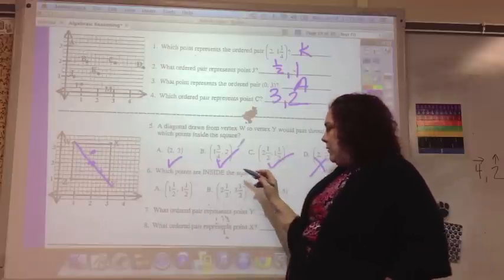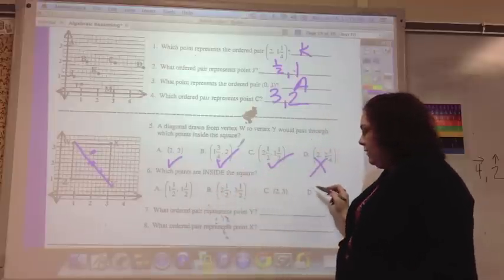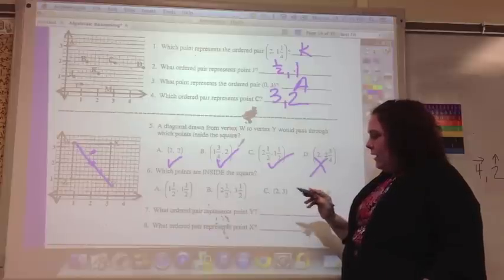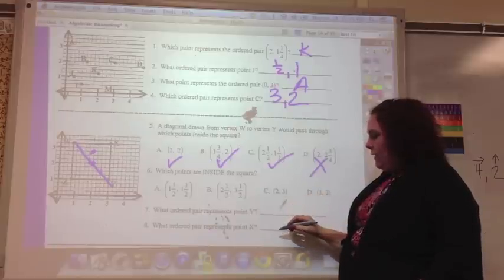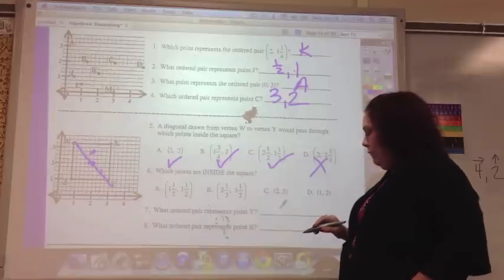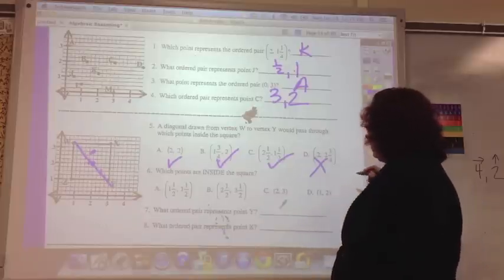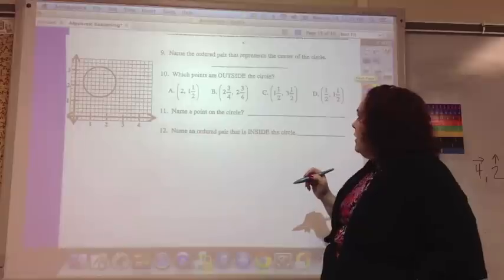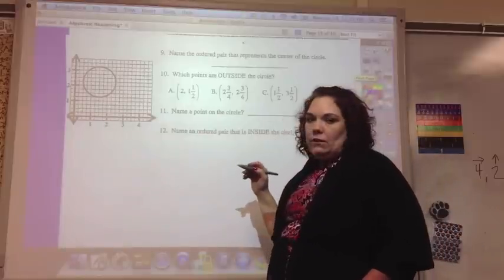And then which points are inside the square? You need to plot each of these and see if it falls inside the square. And then which ordered pair represents point Y? And what point pair represents point X?